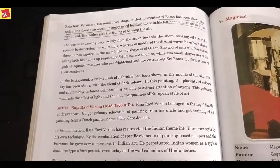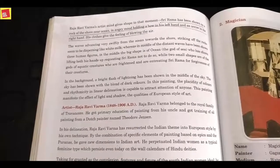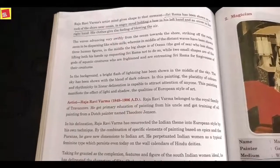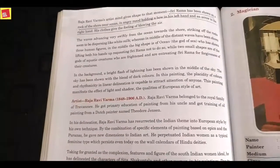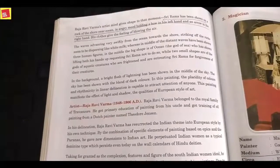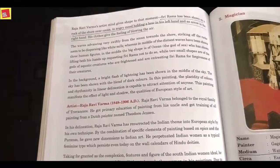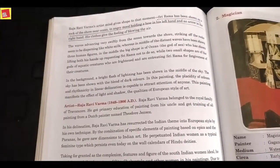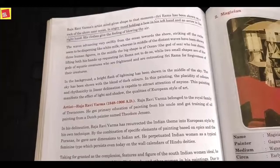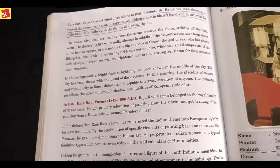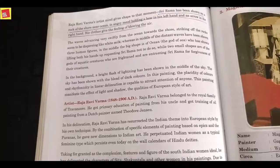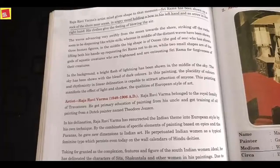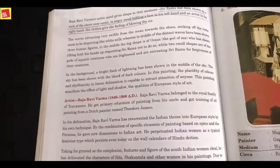Shri Rama has been shown standing on a rock on the shore near the ocean in an angry mood, holding a bow in his left hand and an arrow in his right hand. You have to note this detail. His face expression clearly shows anger. His clothes give the feeling of blowing air.